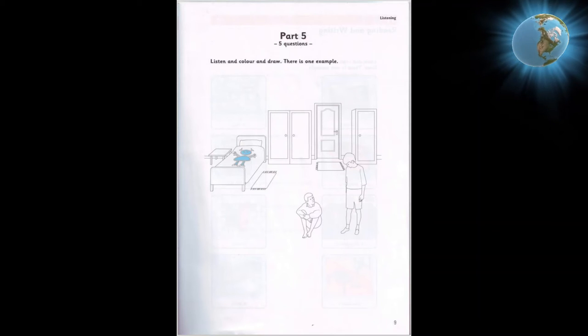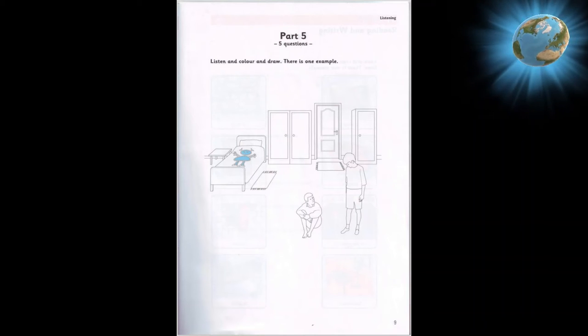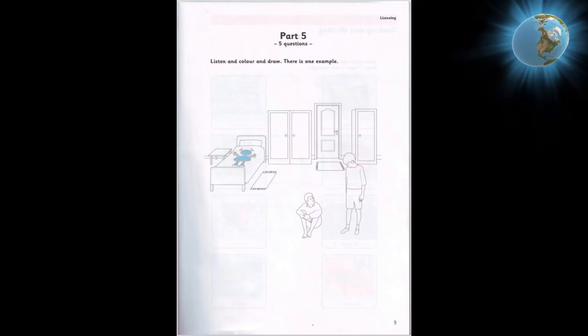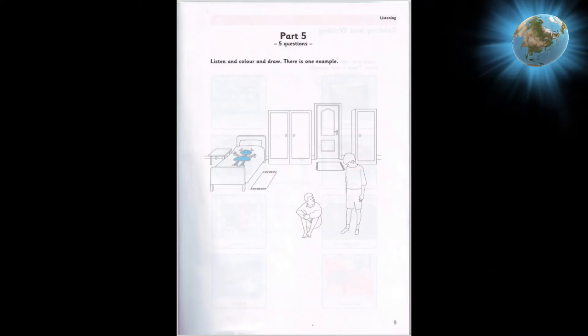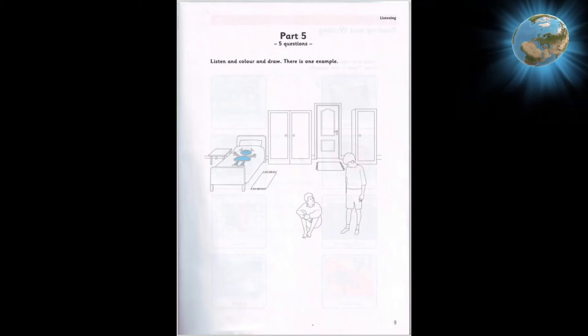Two. Now I want you to draw something. Good. What shall I draw? Draw a lamp. Where? On the small table next to the bed. OK.